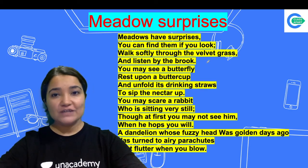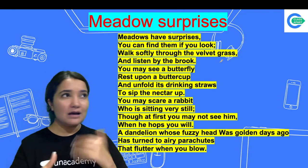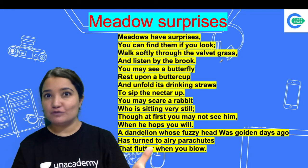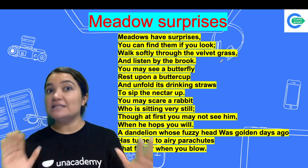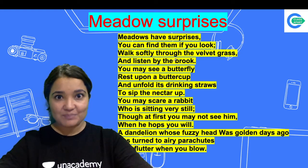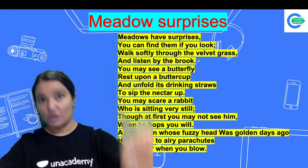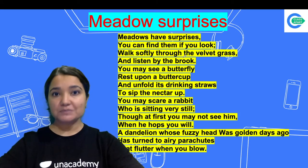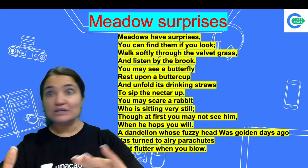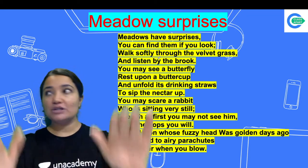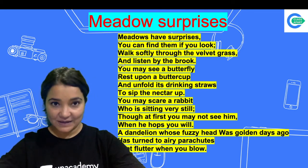Walk softly through the velvet grass — when you see the grass, it is soft as velvet. And listen by the brook. A brook is a stream of water. So if you go and observe everything and listen carefully, you will know what the surprises are.